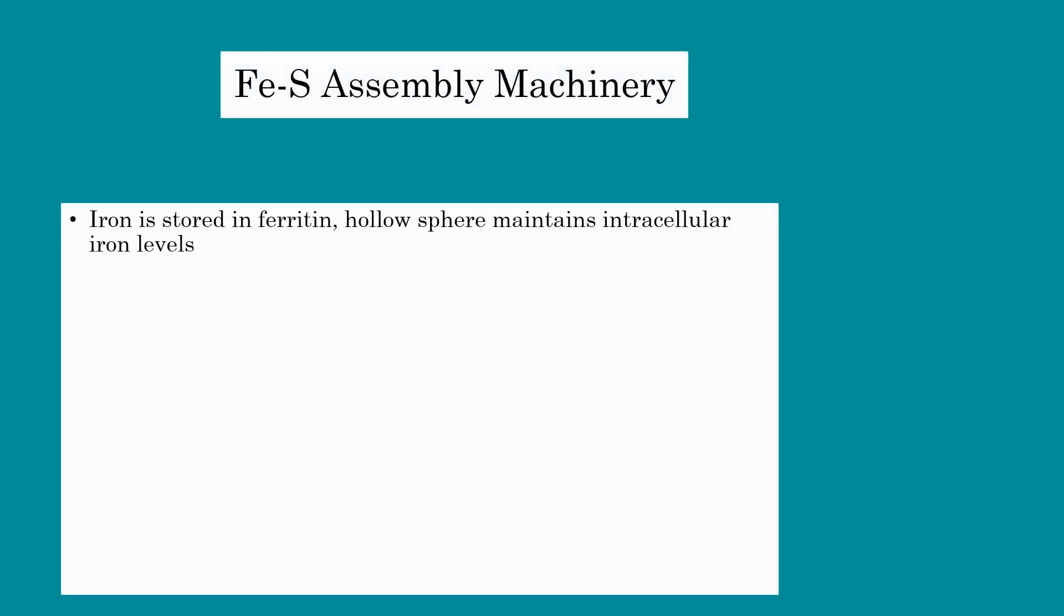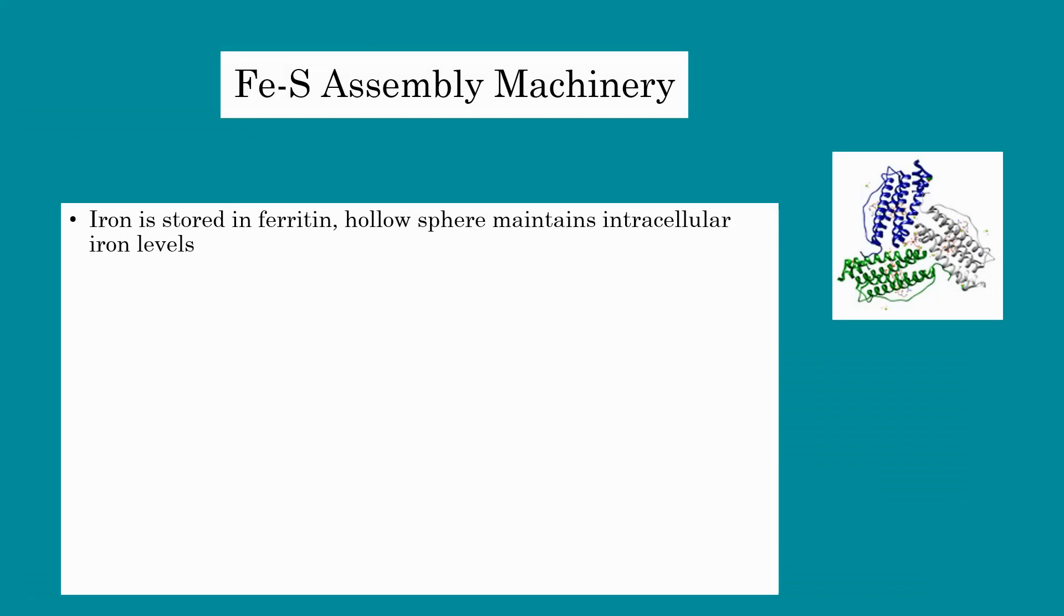In most organisms, iron is stored in ferritin, which accumulates into a hollow sphere that maintains the homeostasis of intracellular iron levels. Ferritin catalyzes the assembly and release of ferrihydrite from the inside of the sphere using catalytic iron sites.